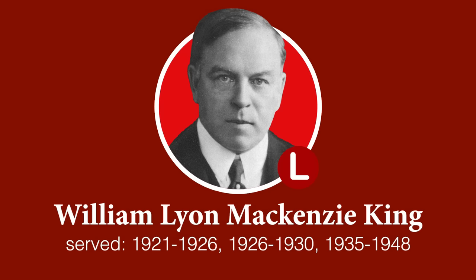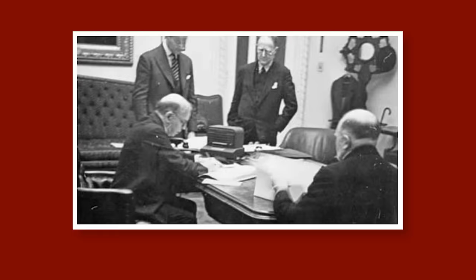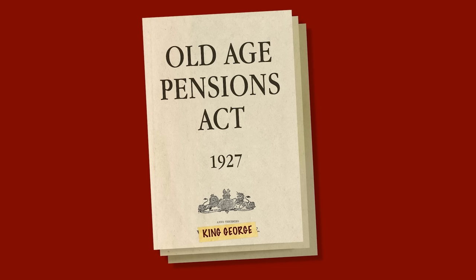Mackenzie King, by contrast, was the longest serving Prime Minister in Canadian history — almost 22 years if you mush all of his dates together. Accordingly he is associated with a great many important things, as you might expect for someone who hung around for so long. He'd go in the A-tier with Old Man Borden. King negotiated Canada's final independence from Great Britain in 1931 and he laid the foundation for what we would now think of as the modern welfare state, introducing innovative social programs like old age pensions for seniors.